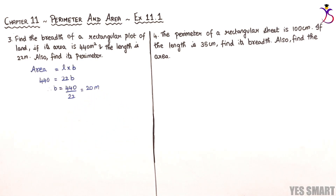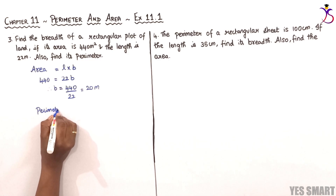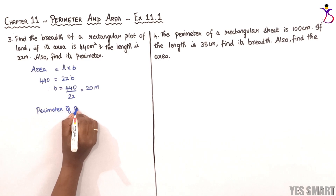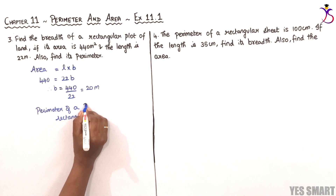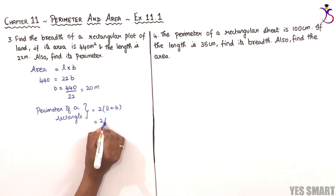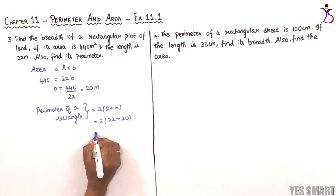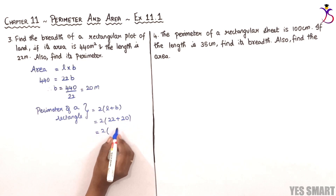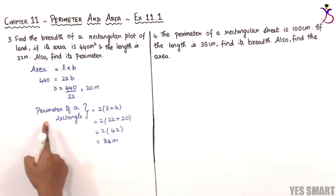Now let's find the perimeter of the rectangle. Perimeter equals 2 into (L plus B). So 2 into (22 plus 20) equals 2 into 42, which equals 84 meters. So the perimeter of the rectangular plot is 84 meters.